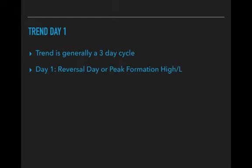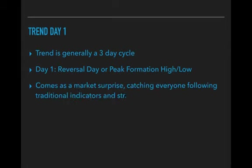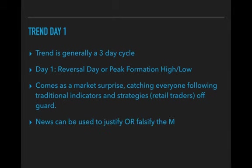Day one of the cycle is a reversal day, or the peak formation high or low — that's the start of the cycle where you get your peak formation W or M. This usually comes as a market surprise, catching everyone following the traditional indicators and strategies — i.e., the retail traders — off guard. They'll have many days of rise or drop and think the trend is continuing, but then the reversal gets thrown in and everyone is caught off guard.